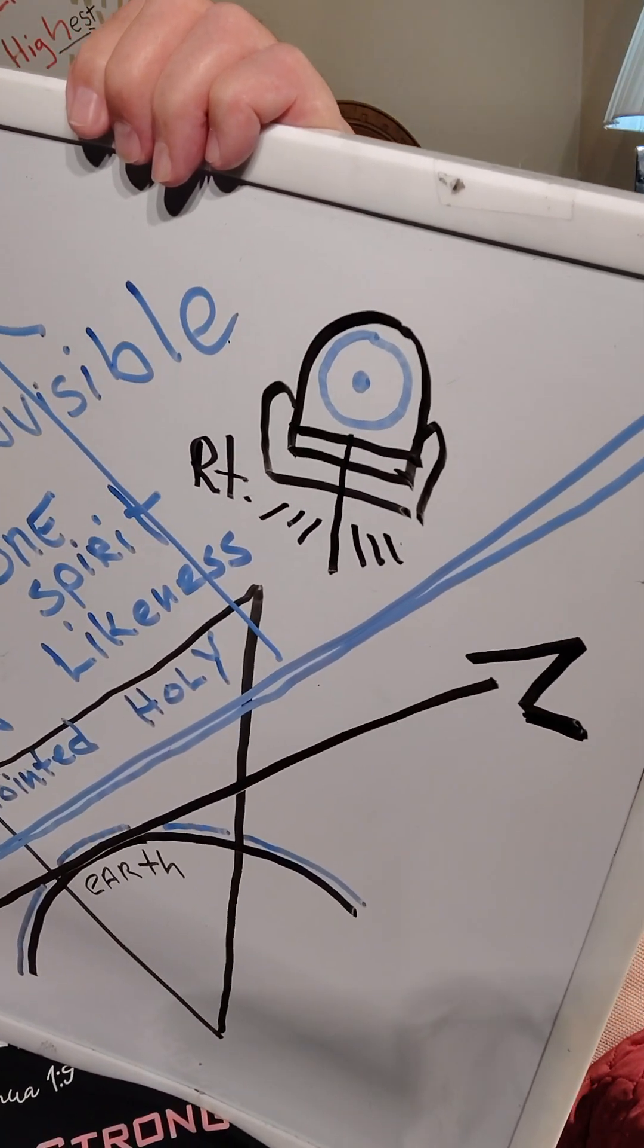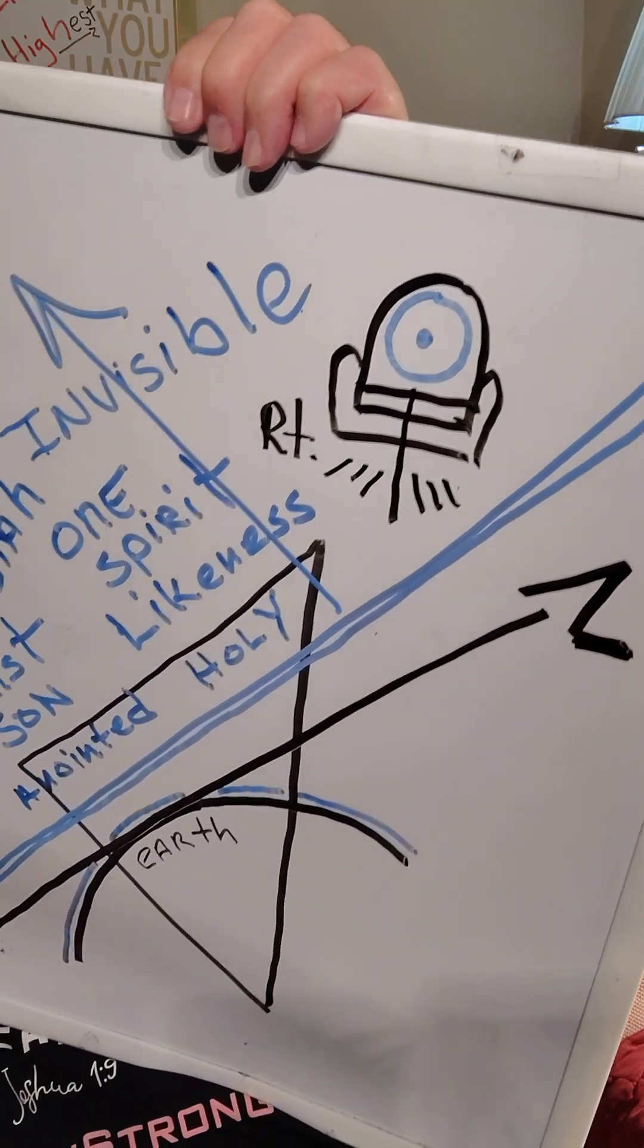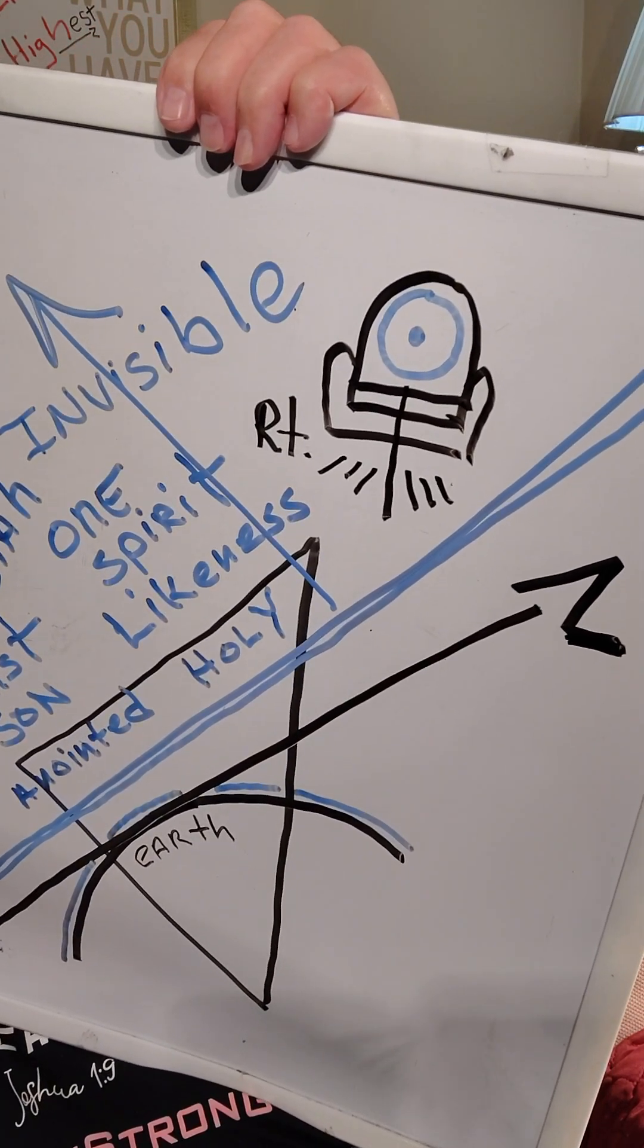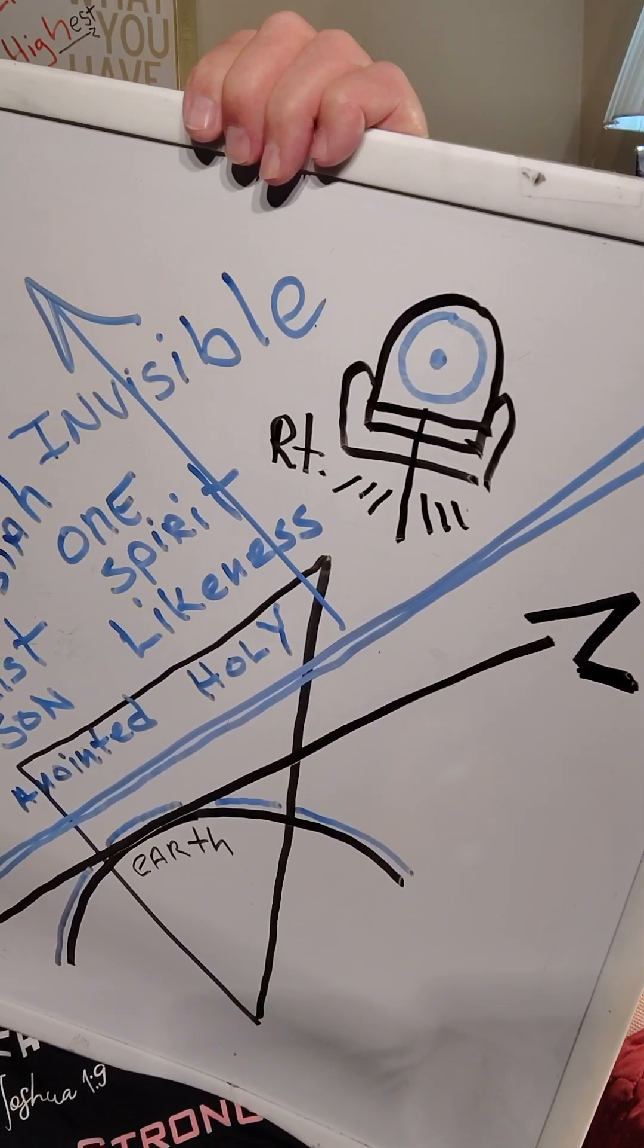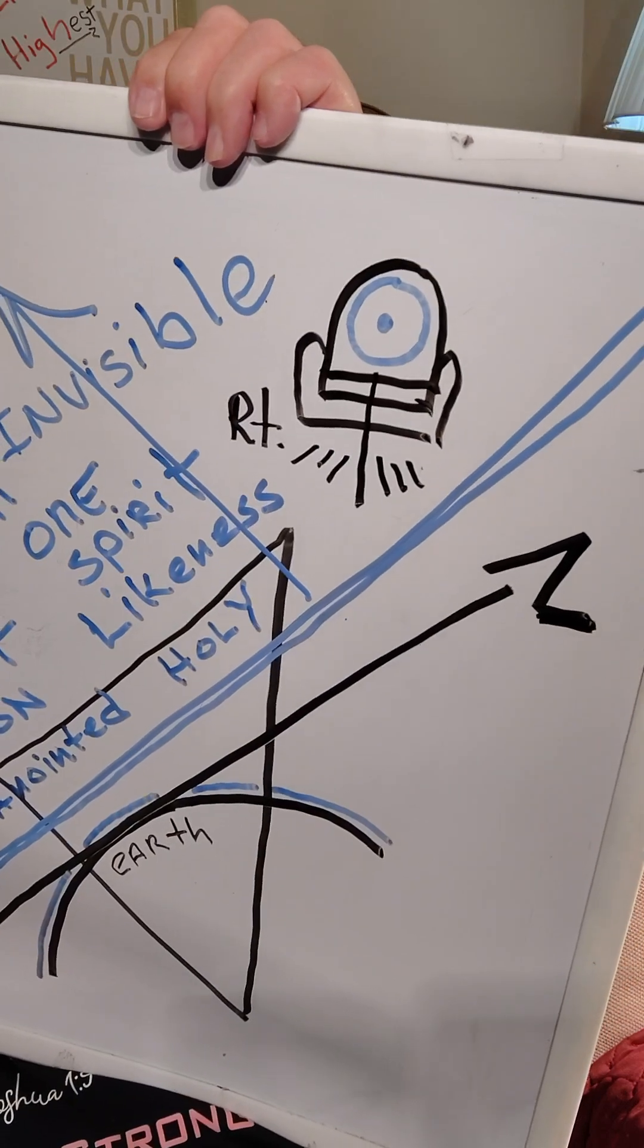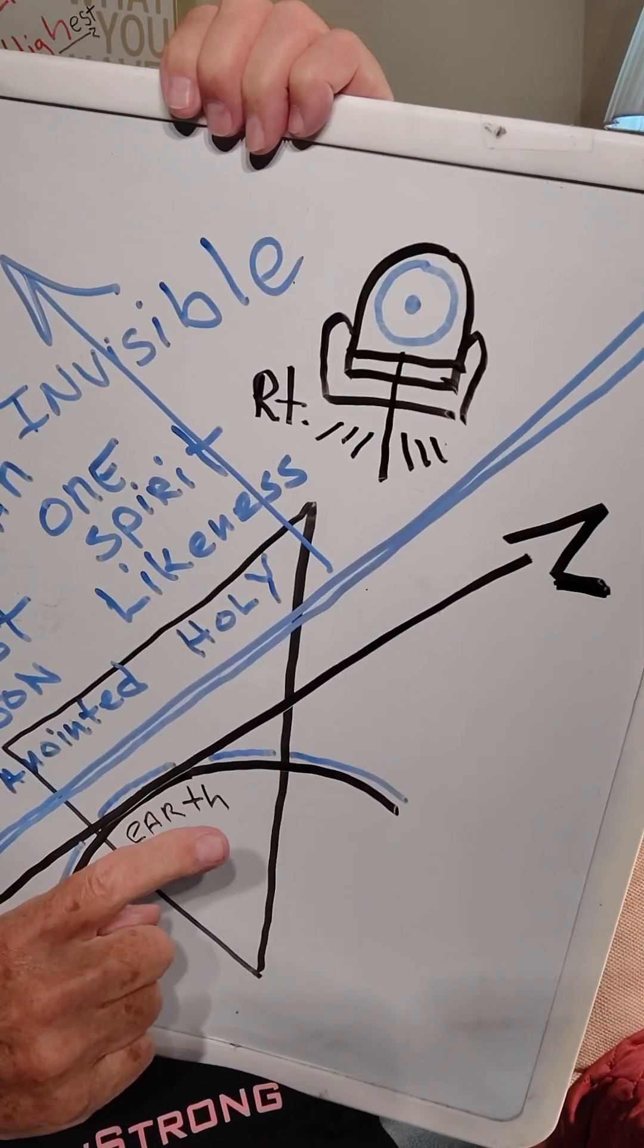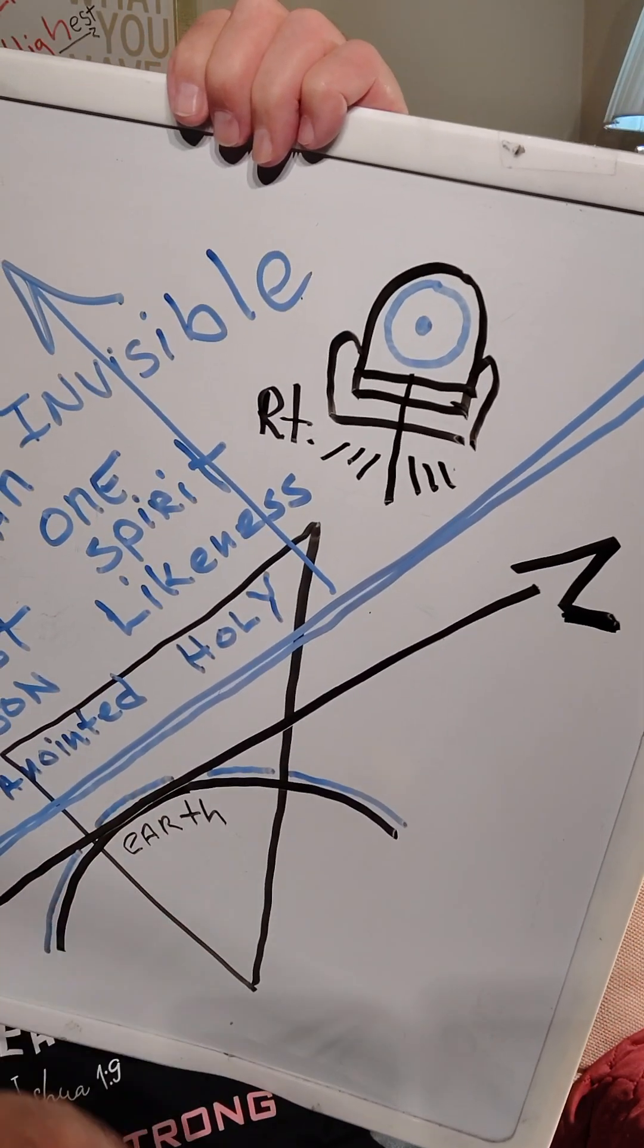The body, the temple, flesh and blood and bone is not created yet. We're only talking about invisible likeness and the creation of the earth by the spirit and the word of God.